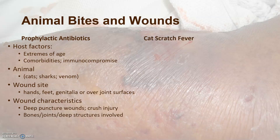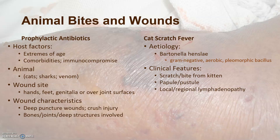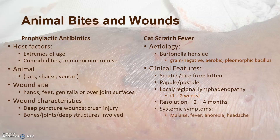Let's think about cat scratch fever. It's caused by Bartonella henselae, a gram-negative, aerobic, pleomorphic bacillus. Patients who are scratched or bitten by kittens develop a pustule or papule and then local or regional lymphadenopathy, which occurs about one to two weeks after the bite and may take two to four months to resolve. These patients can have recurrent or persistent systemic symptoms such as malaise, fever, anorexia, or headache, and sometimes sore throat and arthralgia.